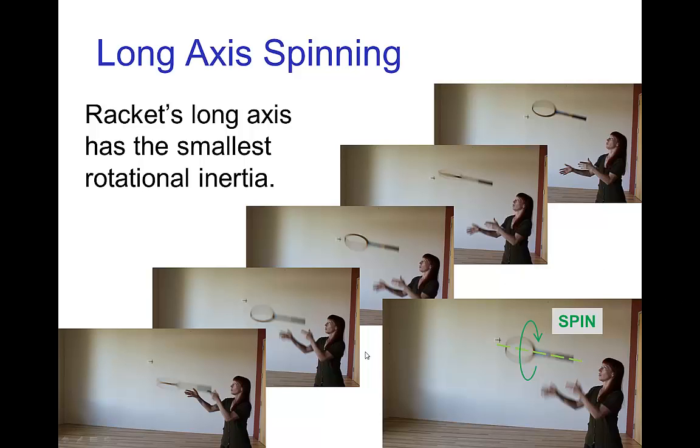Here's some frames from a video of a tennis racket, which is thrown into the air. And in this case, it's spinning around the long axis. This long axis, the racket has the lowest rotational inertia for spinning.